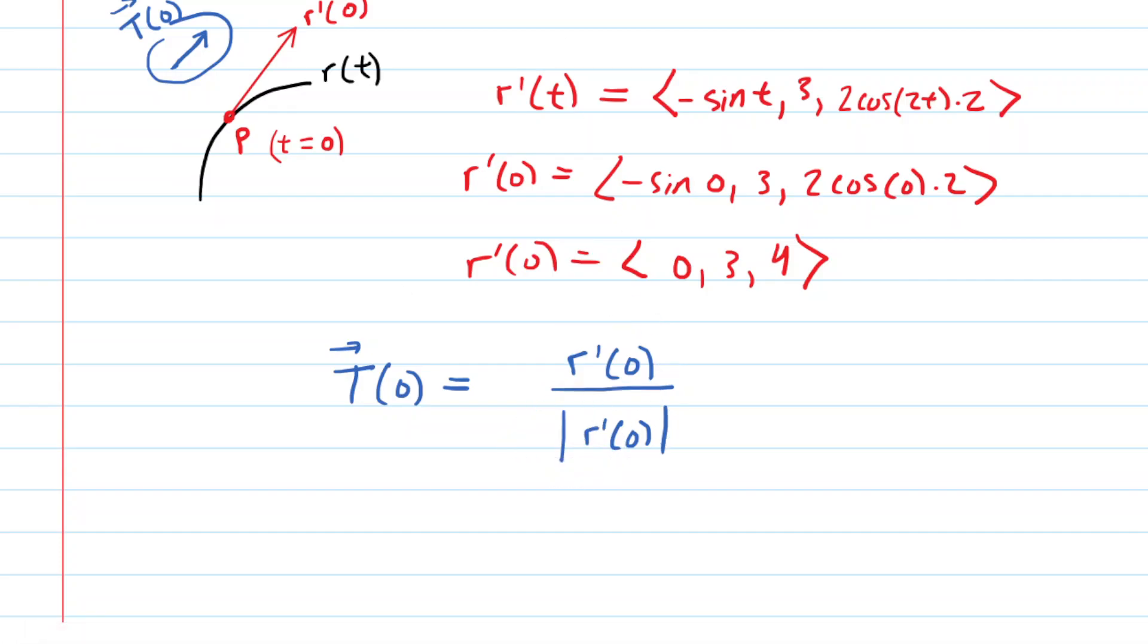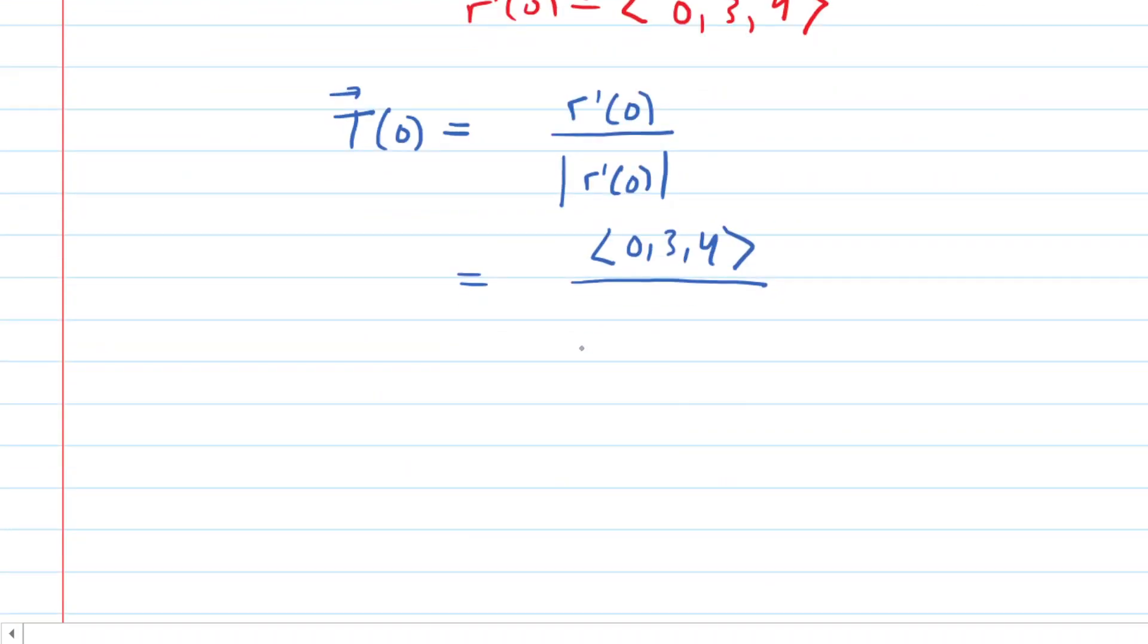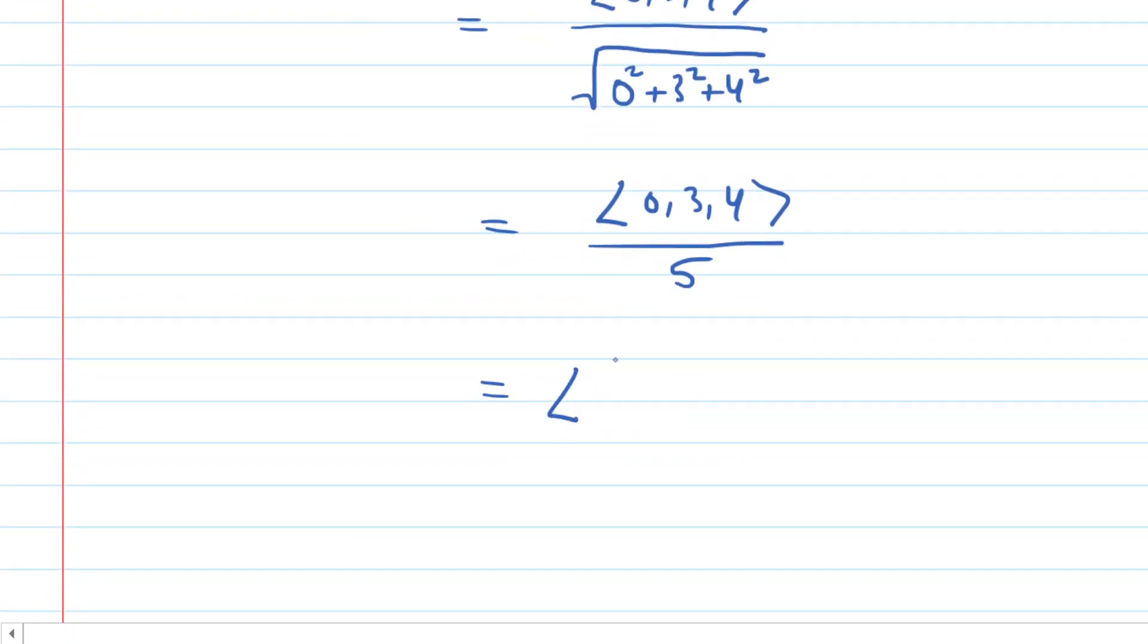So, here we go. We're going to find this unit tangent vector by taking the tangent vector <0, 3, 4>, and then dividing by the magnitude. So, the magnitude is just the square root of the sum of the squares of the components. So, 0 squared plus 3 squared plus 4 squared. In the denominator there, it looks like we're going to get the square root of 25, which is just 5. And then we just divide each component by 5. So, 0 divided by 5 is 0. 3 divided by 5 is 3 fifths. And 4 divided by 5 is 4 fifths.